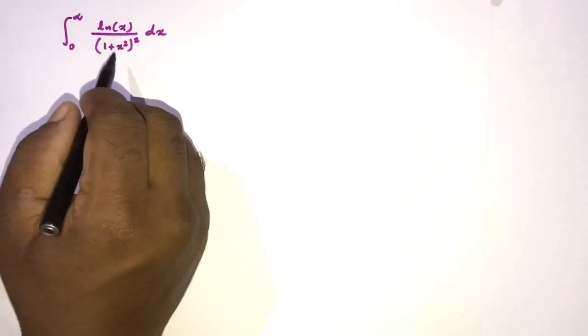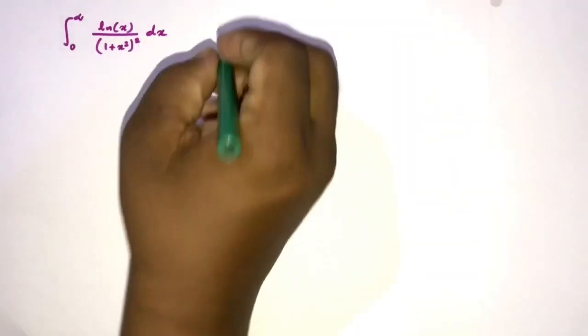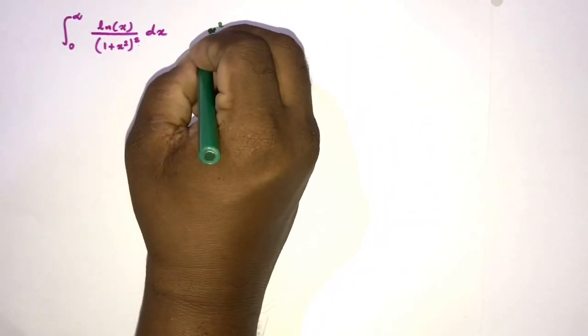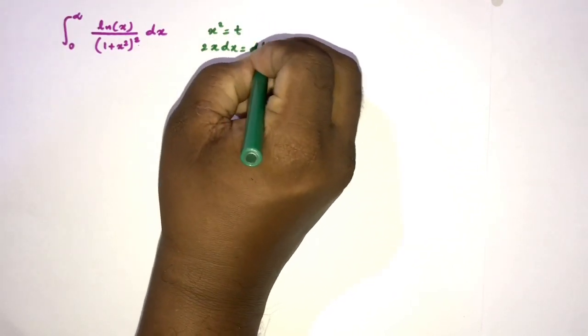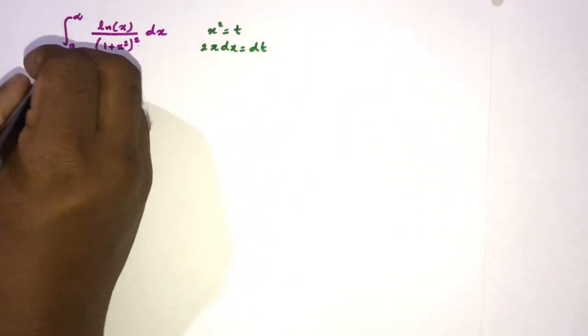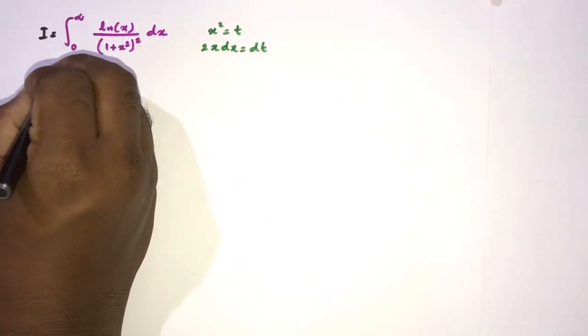How to begin? I don't like this x squared, so I'm going to take a substitution. We can take x squared equals t, then differentiate: 2x dx equals dt. Now we can substitute into our integral. I am going to call this integral I.